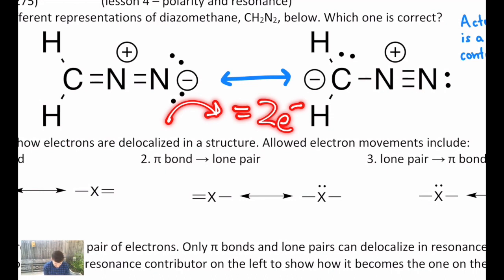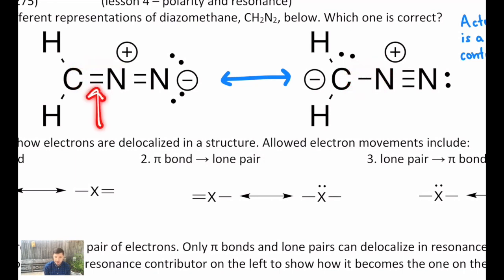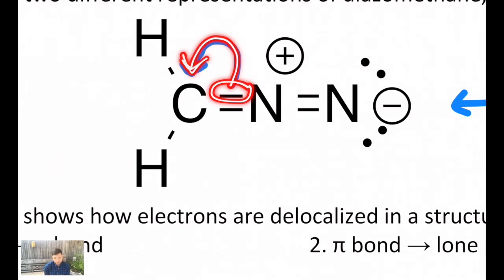For example, I see that this double bond between the carbon and the nitrogen becomes only a single bond, and one of those pairs of electrons ends up on the carbon atom itself. I can show that by drawing a curved arrow from where the electrons came from to where they end up going — in this case, from the bond directly to the carbon atom. That little arrow means that pair of electrons forming the pi bond is no longer there, and now exists on top of the carbon atom as a lone pair.